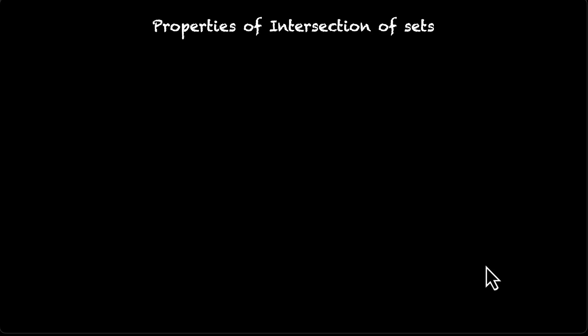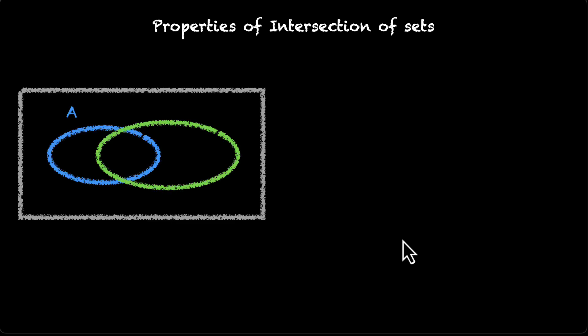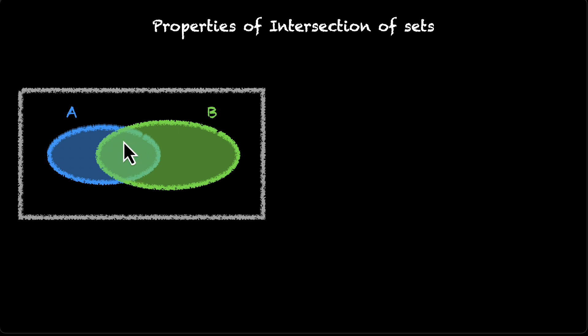Now let's move on to the properties of intersection of sets. You'll see a lot of similarities between union and intersection of sets. We have this universe and we have set A and set B. This time we're going to find the intersection between A and B. A intersection B means we're going to take the region that's common between A and B — that middle region is A intersection B.